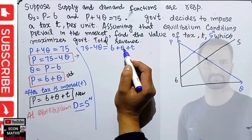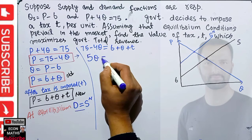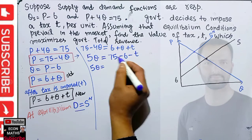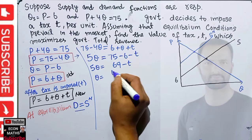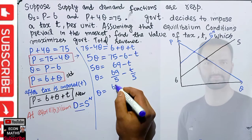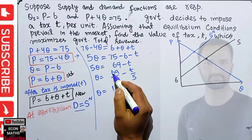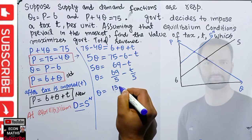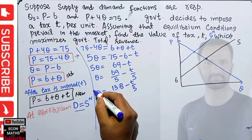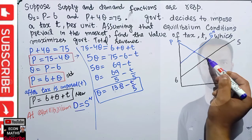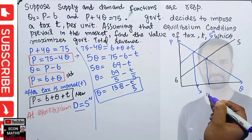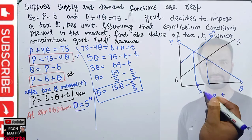Rearranging: 5Q = 75 - 6 - T, which gives 5Q = 69 - T. Therefore Q = (69 - T) / 5, which simplifies to Q* = 13.8 - T/5. So after the per unit tax is imposed, the equilibrium quantity transacted in the market is Q* = 13.8 - T/5.